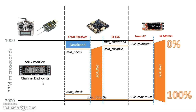If CleanFlight is expecting a minimum of 1,000 and your transmitter is giving it a minimum of 1,100, CleanFlight is going to think your throttle is not all the way down when it really is. That's where transmitters without adjustable endpoints can get you into trouble — they often won't go all the way down to 1,000 or up to 2,000. You can end up in a situation where you can't arm your copter — you push the stick down to the right and it doesn't arm.